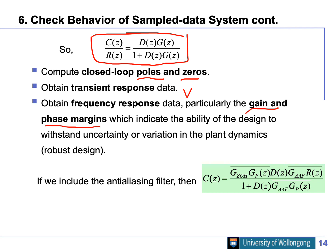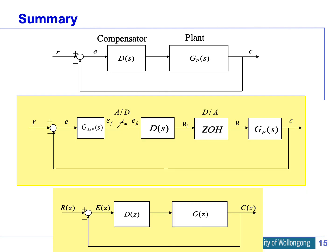You can also include the anti-alias filter in the analysis, which makes things a little bit more complicated. However, its effect is relatively small compared to everything else, and in most cases you can ignore it. But when you design, you should already consider that. The first thing you do is make sure the performance of your controller is satisfied.